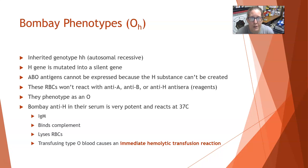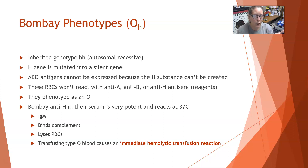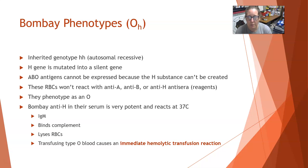Lastly, we'll talk about the Bombay phenotype — another really rare occurrence. This is an inherited genotype hh (small h, small h), which is autosomal recessive, meaning the H gene has been mutated into a silent gene and it does not make the H antigen. The problem is you need the H antigen to make the A or B blood type. So ABO antigens cannot be expressed because the H substance is not created. These red cells won't react with anti-A, anti-B, or anti-H antisera — no reaction at all.